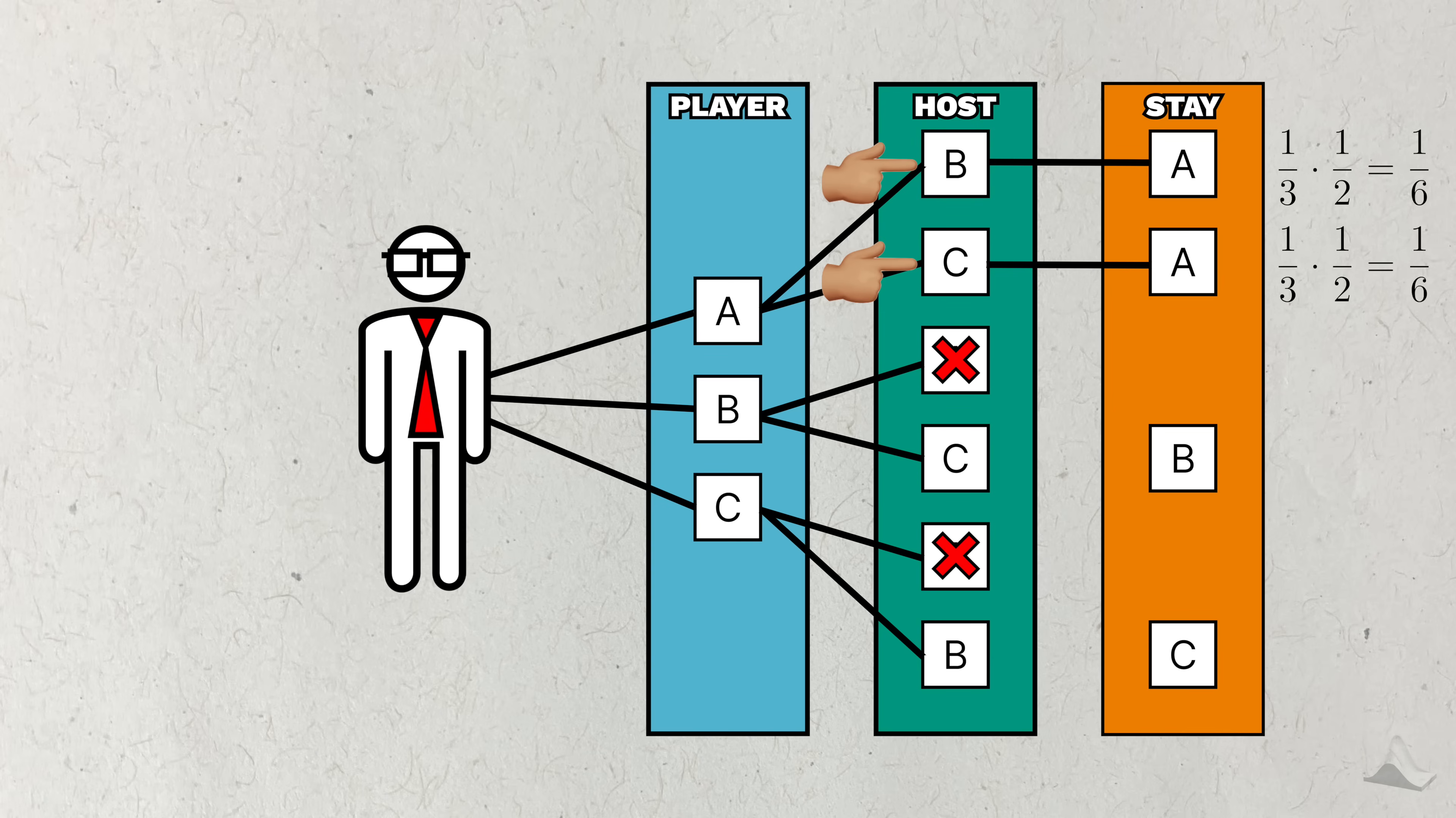So the probability that each of these paths happen is one-sixth. But for these two paths, the probability that the host picks these doors is one-hundred percent, or one. So these paths each have a one-third probability of happening. Since these two paths lead to A, the probability that the player wins by staying at the door is one-third.